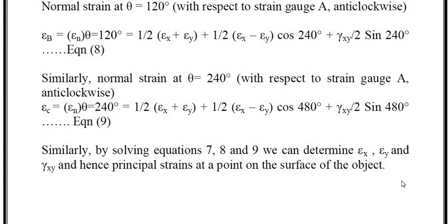This completes the discussion of strain gauge rosettes — the different kinds, how to measure, and the angles between the different gauges. Our overall objective is to find the principal strain at a point on the surface of any object.